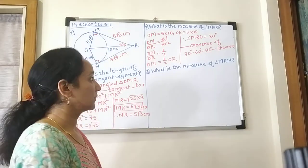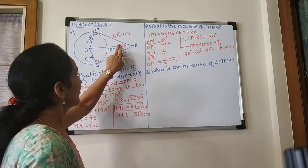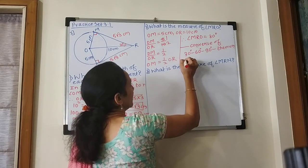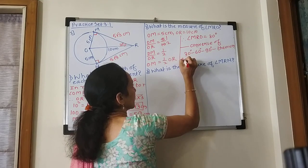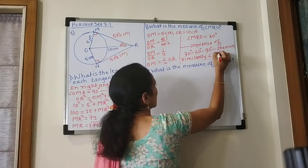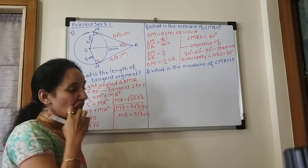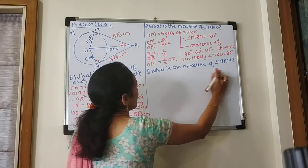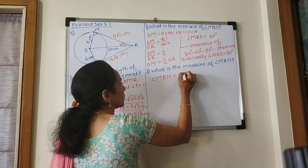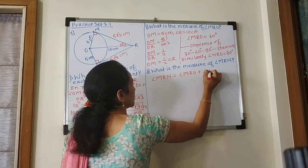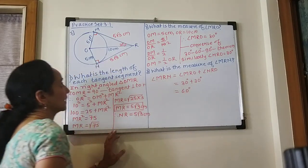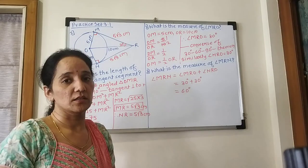Similarly, angle NRO is also equal to 30 degrees. So angle MRO plus angle NRO equals 30 degrees plus 30 degrees, that equals to 60 degrees. So angle MRN's measurement is 60 degrees. So here is example number 2.